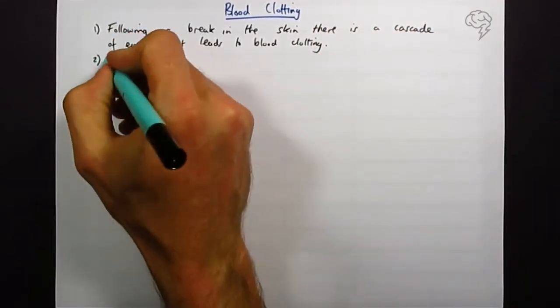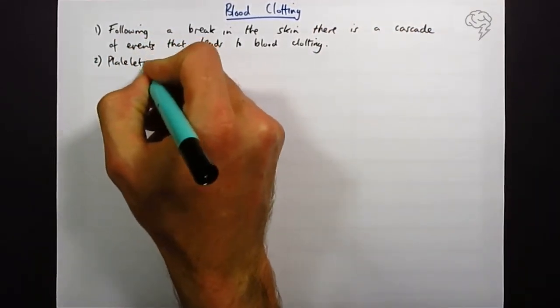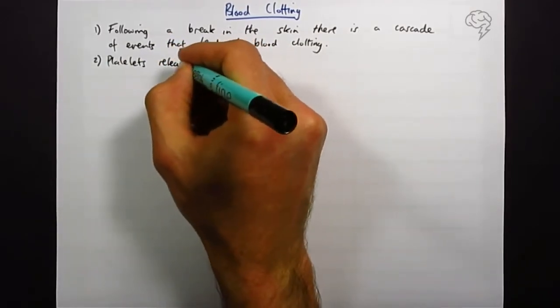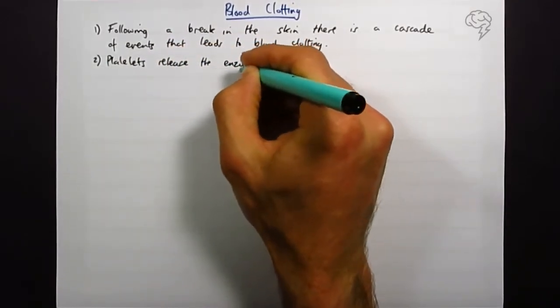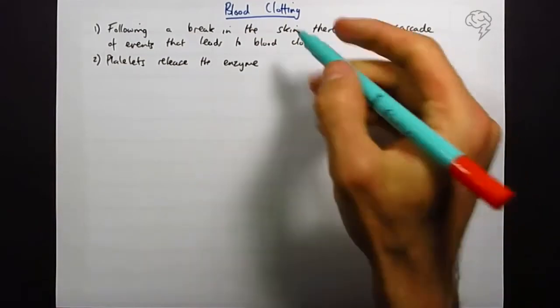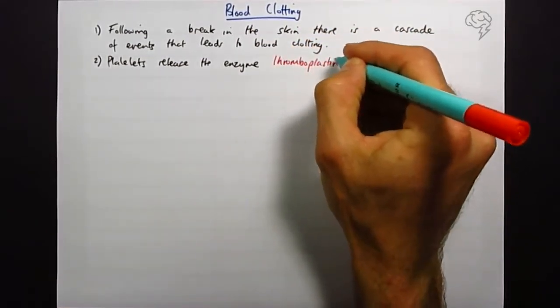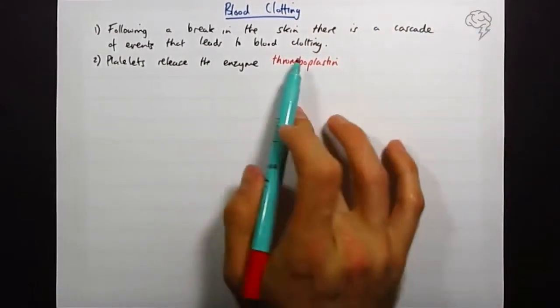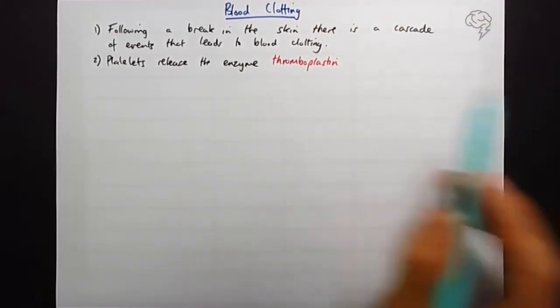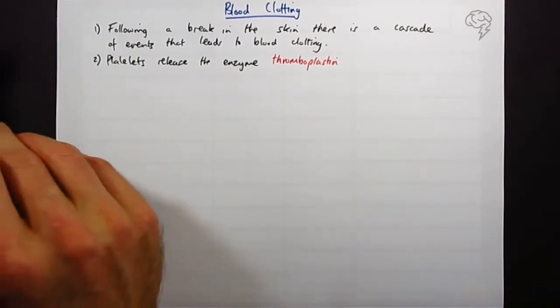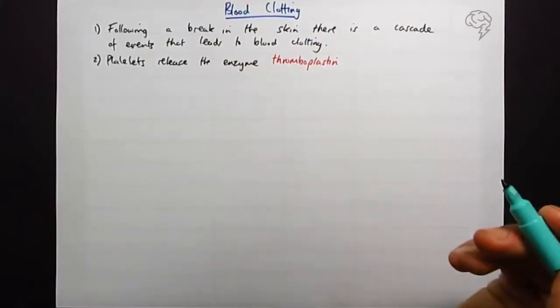Number two: platelets release thromboplastin, which is an enzyme. So a thrombus is a blood clot, so this is obviously an enzyme that's related to the blood clotting process. I'm going to tell you how I remember each of these as I draw a diagram at the bottom.